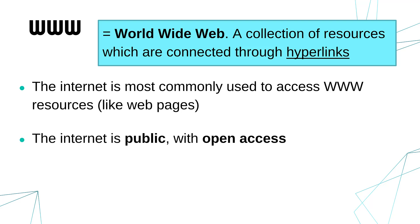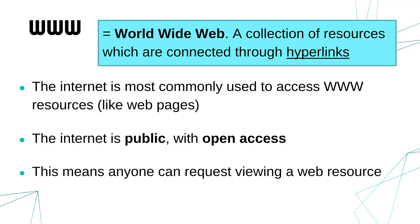The internet itself is a public network — not one person, not one organisation owns the internet. It's available for everyone to connect to as long as they run the required protocols. It's open access, meaning anyone can view anything they want, or at least try to. So if you're putting a web page on the internet, anyone in the world can request to view that web resource.